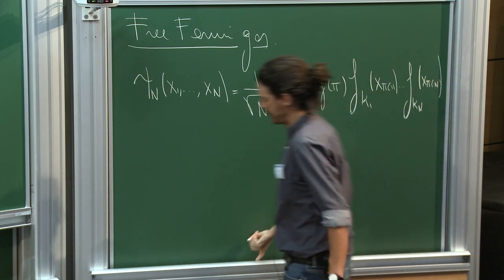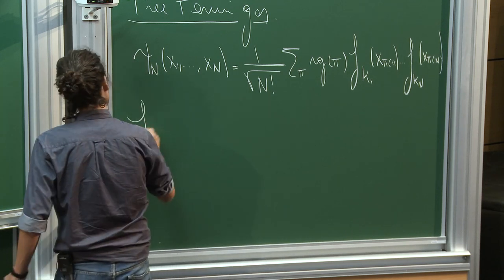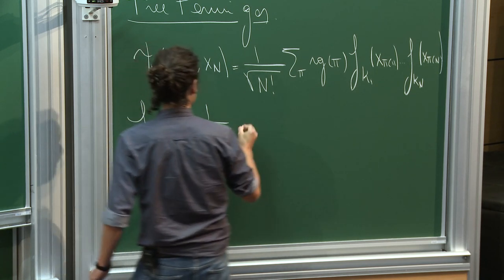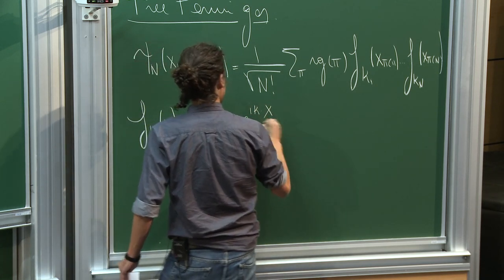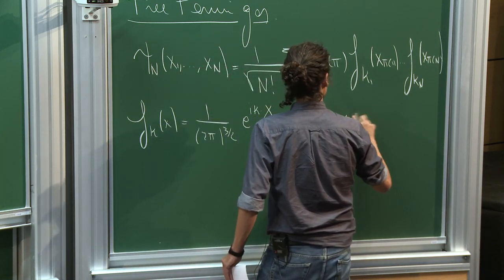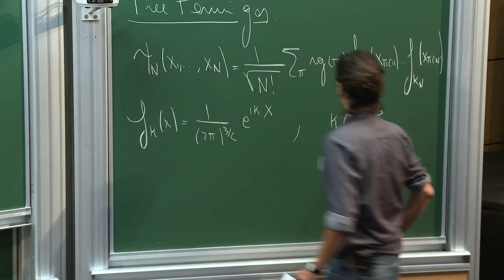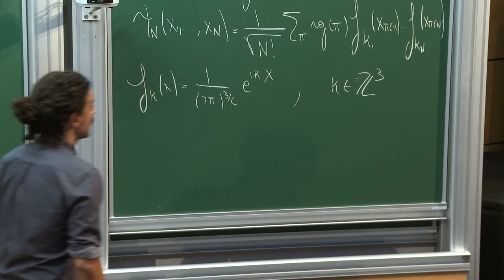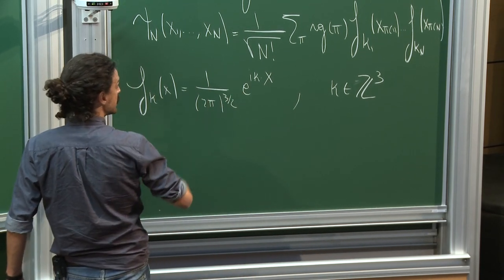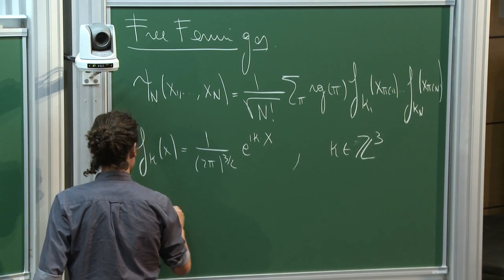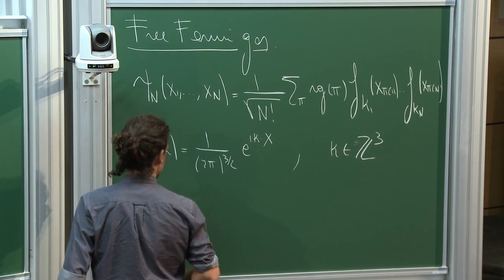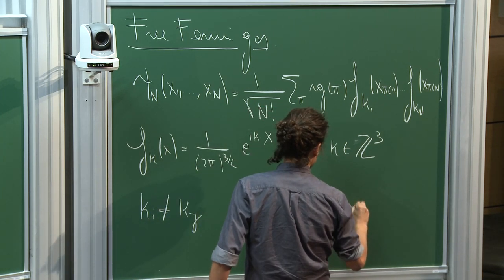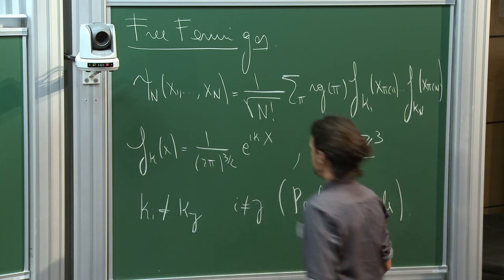The fk's denote plane waves: f_k(x) = (2π)^{-3/2} e^{ikx}, with k in Z^3 for periodic boundary conditions. The Pauli principle requires the k's to all be different — otherwise the wave function is identically zero. So k_i must differ from k_j for i ≠ j, due to antisymmetry.